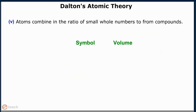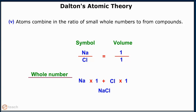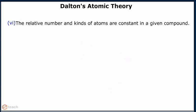Atoms combine in the ratio of small whole numbers to form compounds. The relative number and kinds of atoms are constant in a given compound.